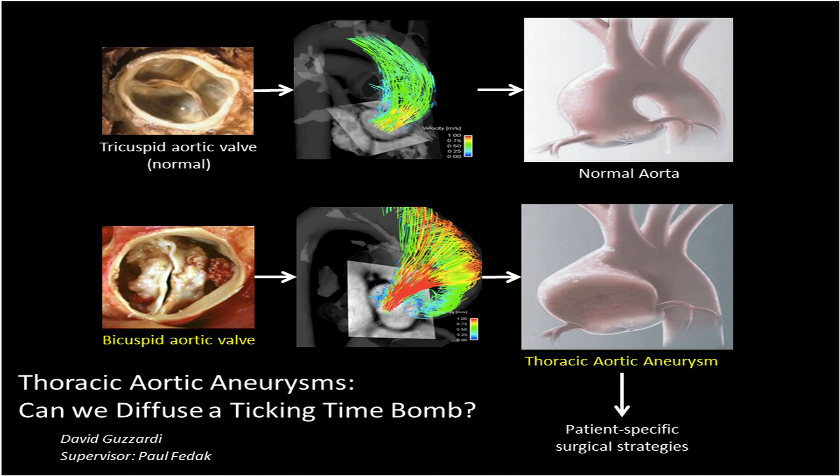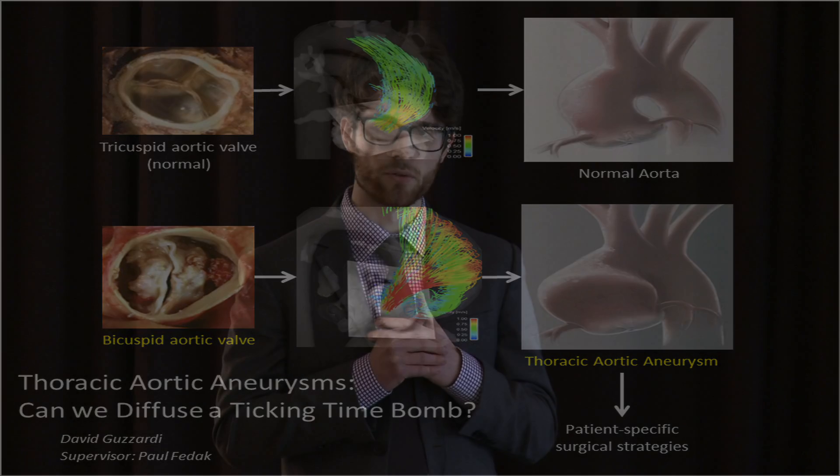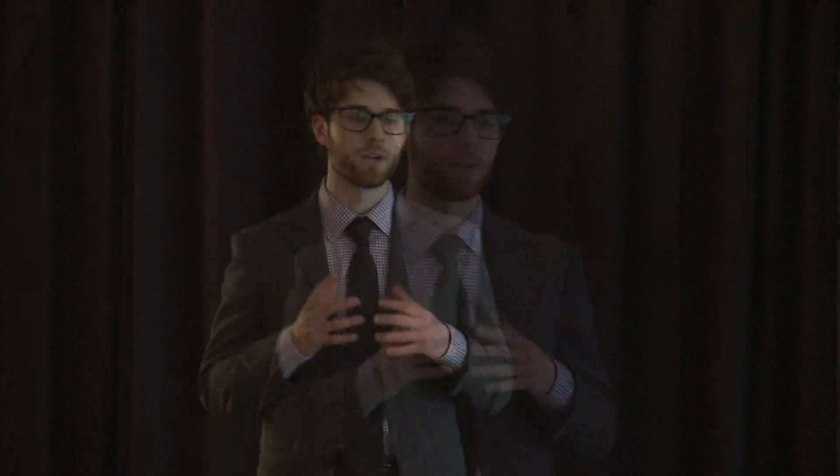These patients are also prone to progressive weakening and enlargement of their aortas, leading to an aneurysm. But what causes these aneurysms is not well understood. It used to be thought the cause was genetics — that you're born with a genetically abnormal valve, so you must also have been born with a genetically weakened aorta. But recent studies show that blood flow may actually create regions of stress in the aorta that lead to disease.